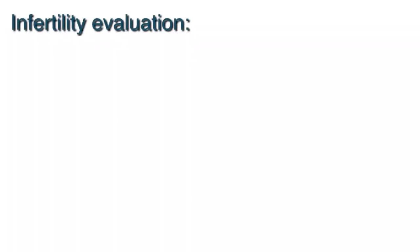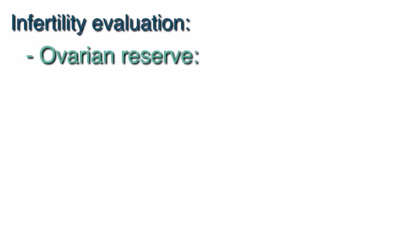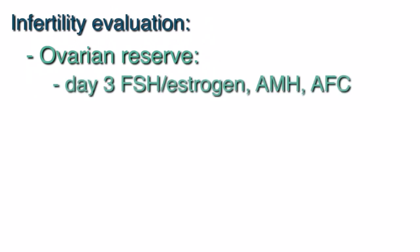At the end of the visit, we'll discuss the basic elements of the infertility evaluation, which include checking ovarian reserve, which we do with three tests typically: a day three FSH and estrogen level, an AMH, and an antral follicle count.